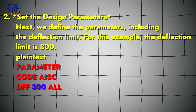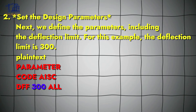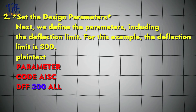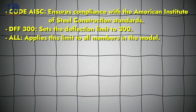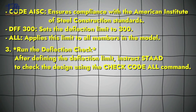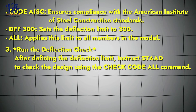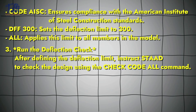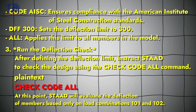For example, with a deflection limit of 300, we specify: PARAMETER, the specific code you are using (AISC or Indian code), and DFF 300. The code specification ensures compliance with the particular code, DFF sets the deflection limit to 300, and ALL applies it to all members in the model. Then we run the deflection check using the CHECK CODE ALL command.